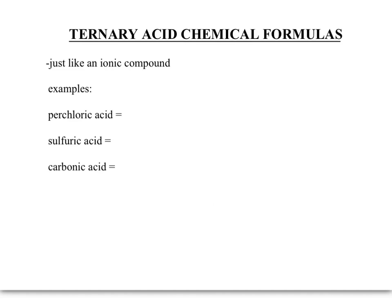When we write chemical formulas for ternary acids, it's just like writing the formula for an ionic compound — we need the charges, we'll crisscross them, and those will be our subscripts. In perchloric acid, there is no prefix 'hydro,' so we know it's a ternary acid from a polyatomic ion. An '-ic' ending comes from an '-ate' ending, so perchlorate is the polyatomic ion. Hydrogen has a plus one charge, and perchlorate is ClO4⁻ with a negative one charge. Crisscrossing gives us HClO4.